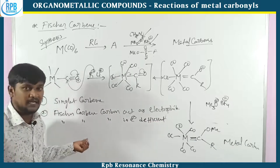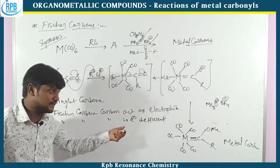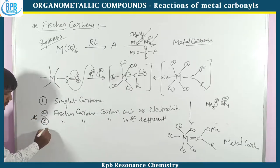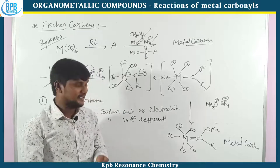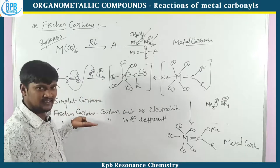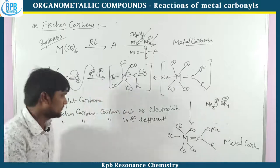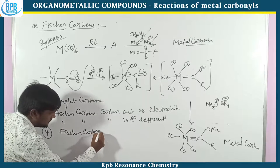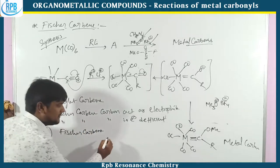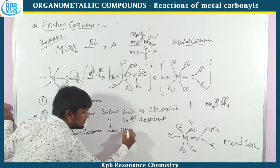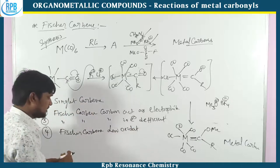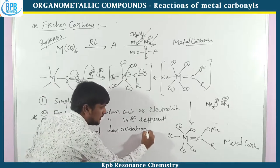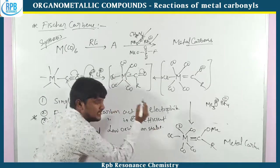Fischer carbene carbon is electronically deficient — that's why it is an electrophile. These two statements are interlinked. Fischer metal always exists in a low oxidation state. Low oxidation state.